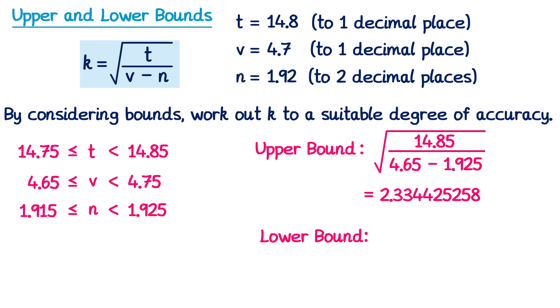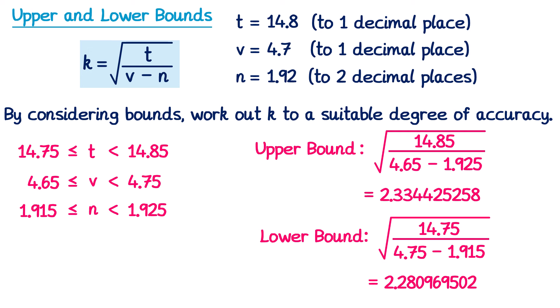For the lower bound, everything is reversed. On the top we use the lower bound of t — 14.75. For the bottom, to make the subtraction as large as possible, we start with the biggest value for v — 4.75 — and subtract as little as possible using the lower bound of n — 1.915. So the lower bound is √(14.75 / (4.75 − 1.915)). Typing this into a calculator gives the lower bound.